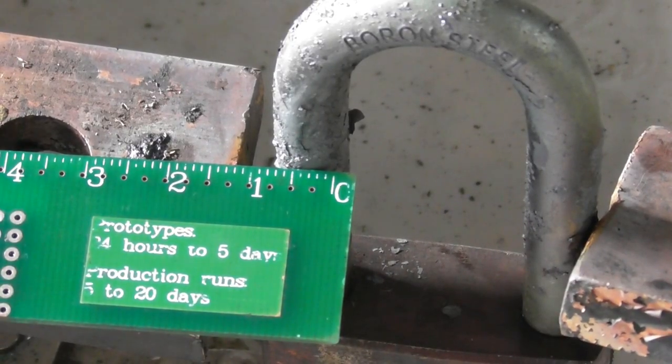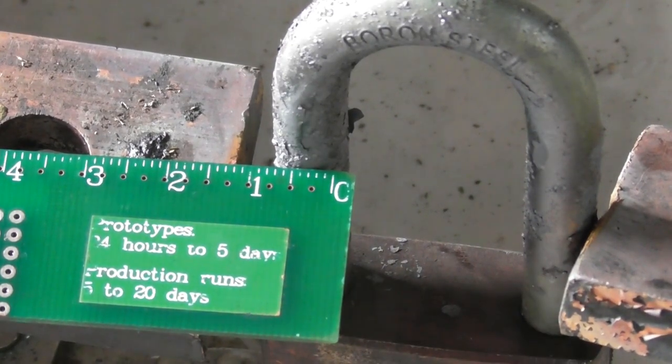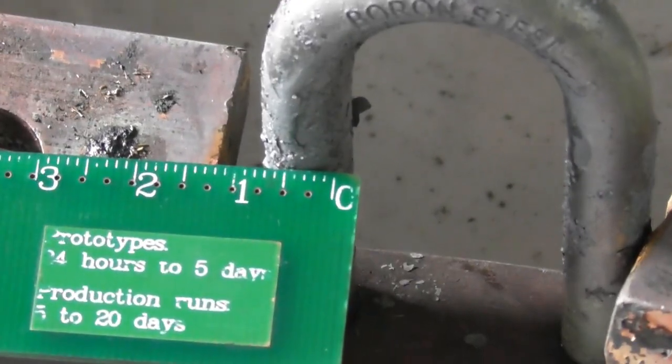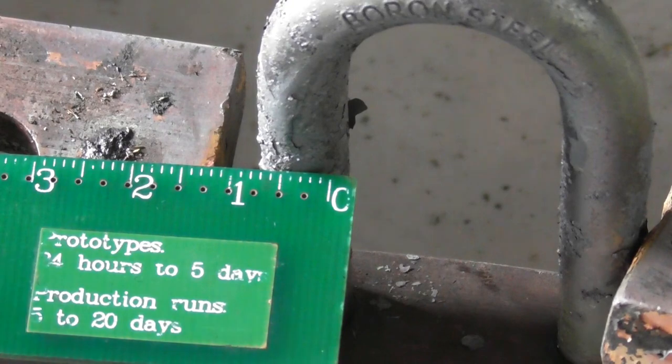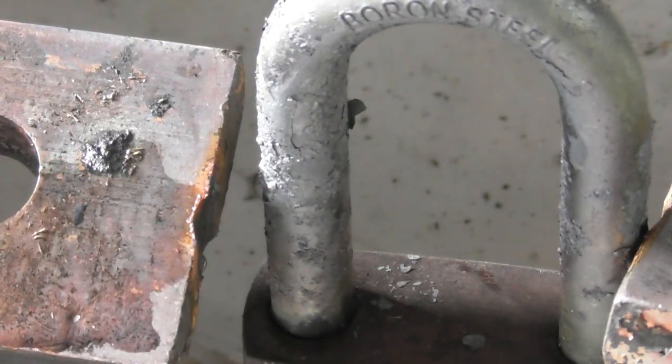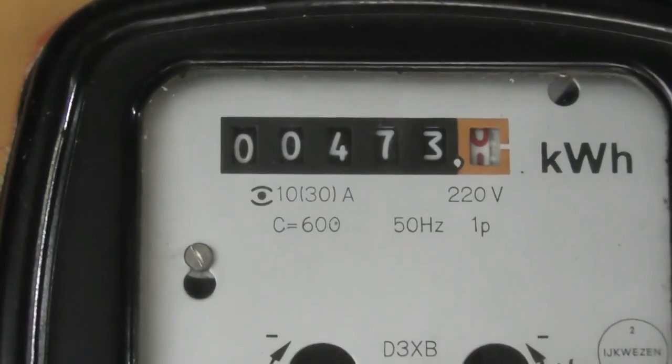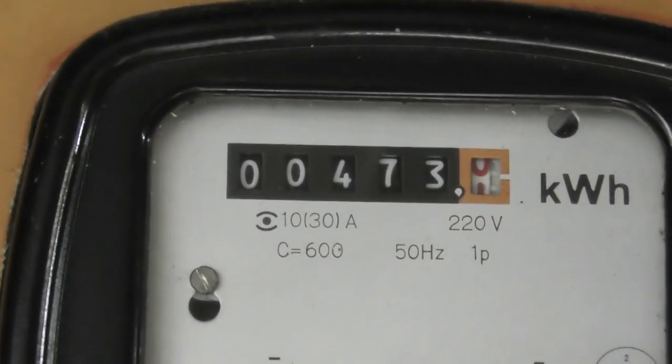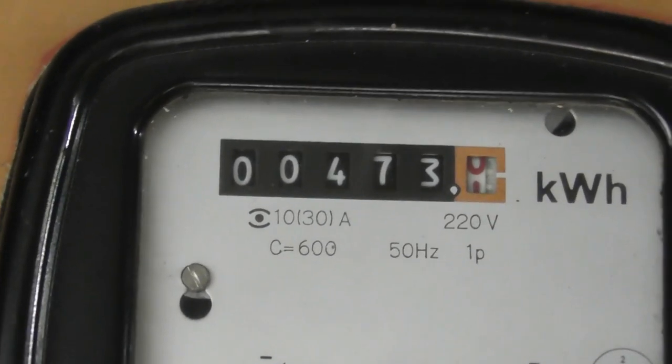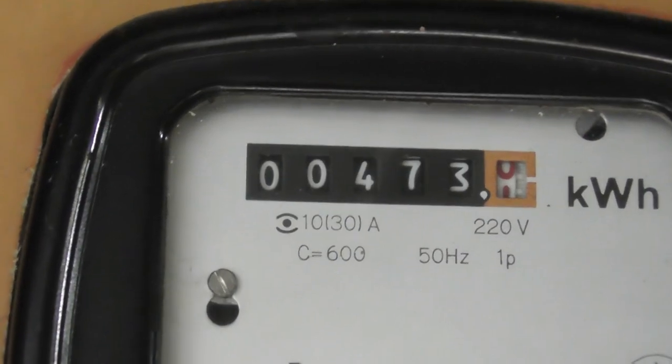Now the hasp is 8 millimeter thick. Just a closer shot here. Hope you guys can see it. The start reading was 472.8 and it's finished at 473.05. So 250 watt hours.